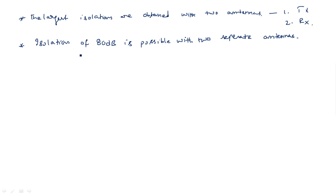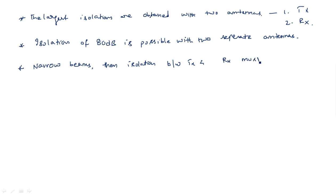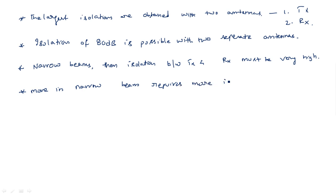The more directional the antenna beam and the greater the spacing between the antennas, the greater the isolation. If you are transmitting a narrow beam, the isolation between transmitter and receiver must be very high. In other words, a more narrow beam requires more isolation.